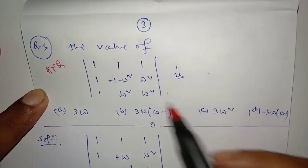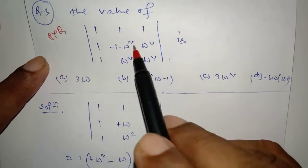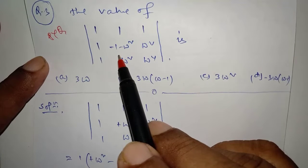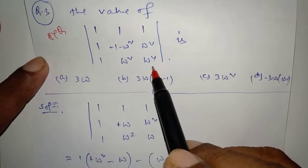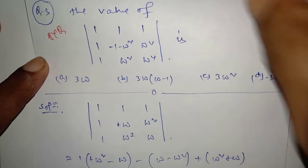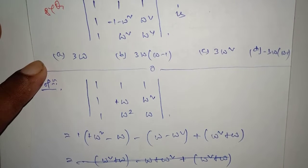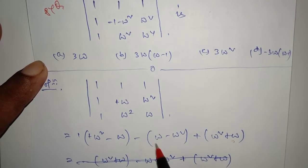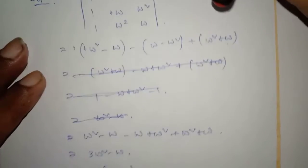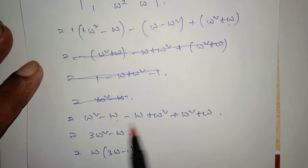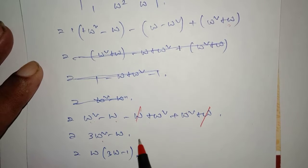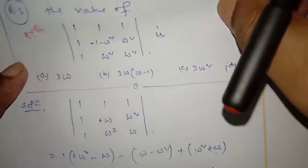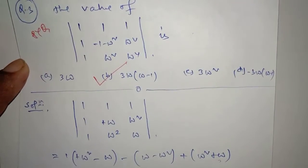A PYQ from JEE Advanced: find the value of this determinant. Here is 1, 1, 1. Replace using 1 plus omega plus omega squared equals 0. The value here is omega, omega squared, omega squared. Omega to the power 4 means omega. Now expand the brackets and remove them — you get omega squared minus omega. The omega terms cancel, leaving 3 omega squared minus omega. Take omega as common: that is omega(3 omega minus 1). So option B is the right choice.